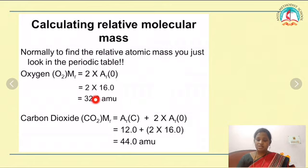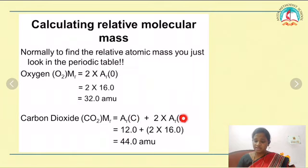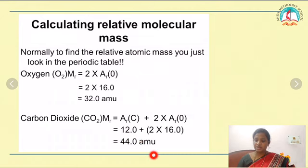For carbon dioxide, CO₂ has one atom of carbon and two atoms of oxygen. The atomic mass of carbon is 12, and for oxygen it is 16. So we have 1 × 12 = 12 plus 2 × 16 = 32, giving us 12 + 32 = 44 atomic mass units as the relative molecular mass of carbon dioxide.